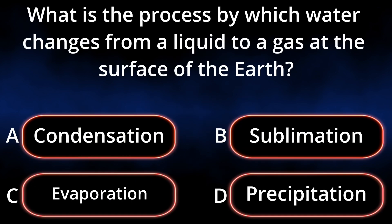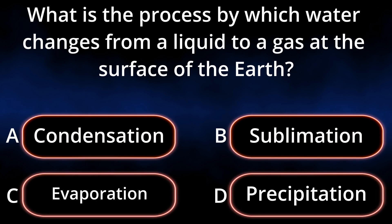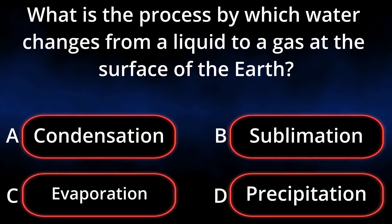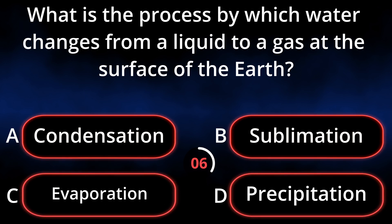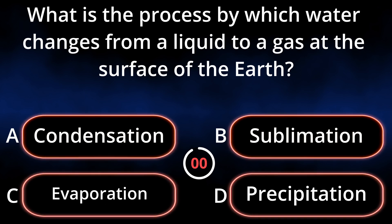What is the process by which water changes from a liquid to a gas at the surface of the earth? A. Condensation. B. Sublimation. C. Evaporation. D. Precipitation. Answer: Evaporation.